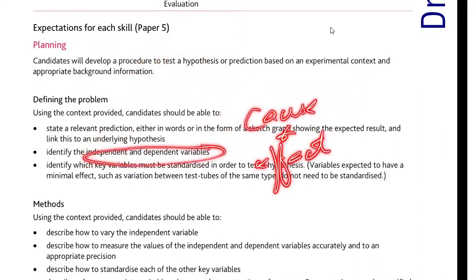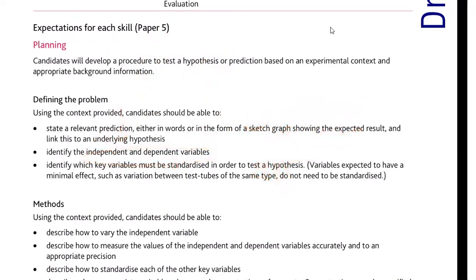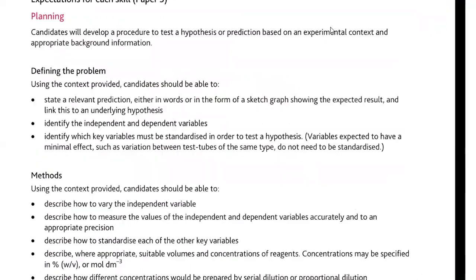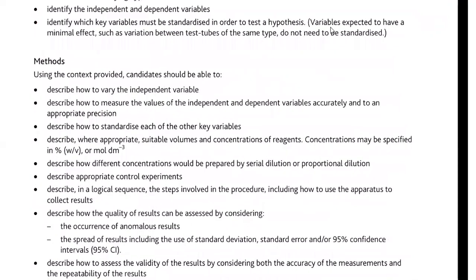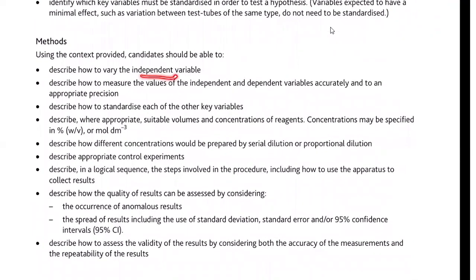Cause and effect means that if you are changing the independent variable, the dependent variable will keep on changing. The change in the dependent variable is the effect of the cause. You may be asked to describe the standardized order to test the hypothesis. Variables will be given to you. You may be asked to devise methods — describe how to vary the independent variable, how you are varying the cause of the experiment, and how to measure your independent and dependent variables for that particular set of experiment.